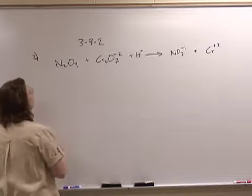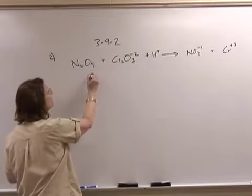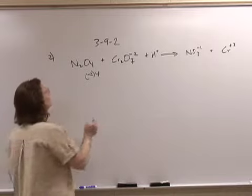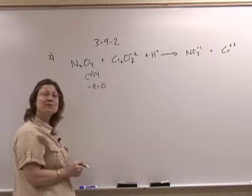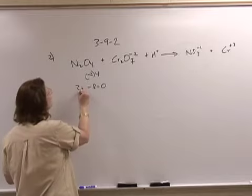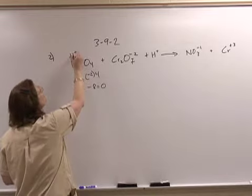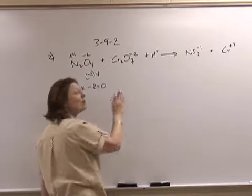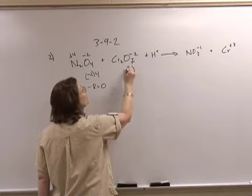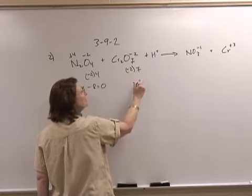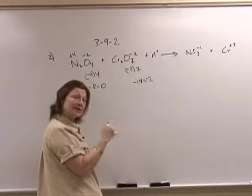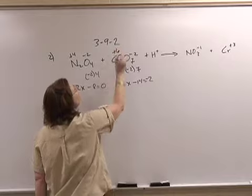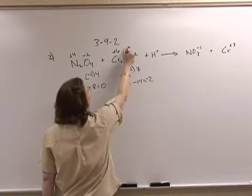This is a compound and oxygen is in the negative position, following its periodic position. There are 4 of them, each one negative 2, giving me a negative 8. This is a compound and therefore it is 0. There are 2 nitrogens and nitrogen is plus 4. In the dichromate polyatomic ion, oxygen is negative 2; there are 7 of them giving a negative 14, with an overall charge of negative 2. There are 2 chromiums and therefore each chromium is plus 6.